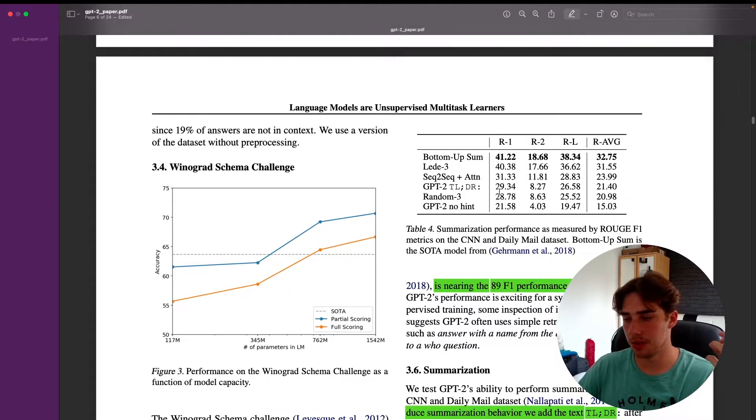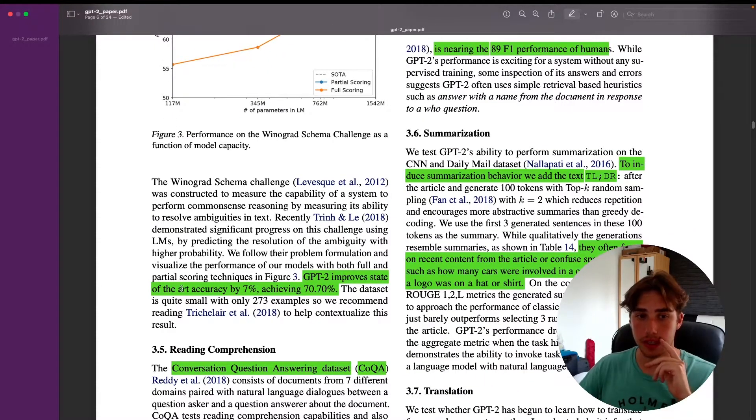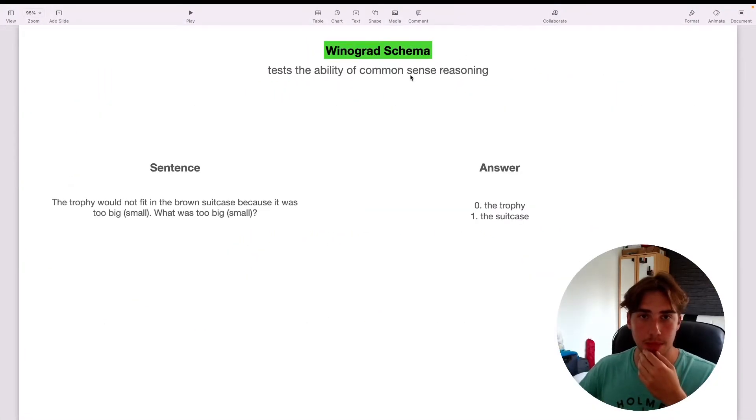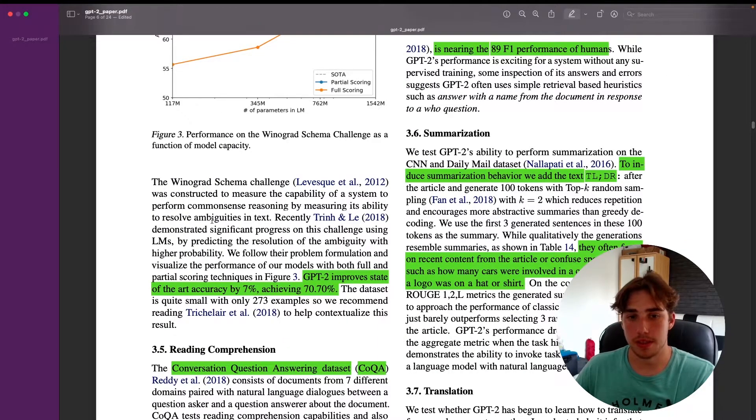This is the language modeling task. Now we can move to the task that are not related so much to language modeling, like Winograd Schema Challenge. They actually improve the state-of-the-art accuracy by 7%, and I think it proves that the model learns more than just generating the text, but also understanding the text. Winograd Schema is testing the common sense reasoning. That's what, for me, is more impressive than actually generating new text. The simple example is a sentence: 'The trophy would not fit in a brown suitcase because it was too big. What was too big?' In this task you need to understand what was too big, right? You need to understand the sentence. And yeah, it achieved 70% accuracy, beat the state-of-the-art result, and I think it's more interesting than just language modeling tasks, and I think that's really good results.